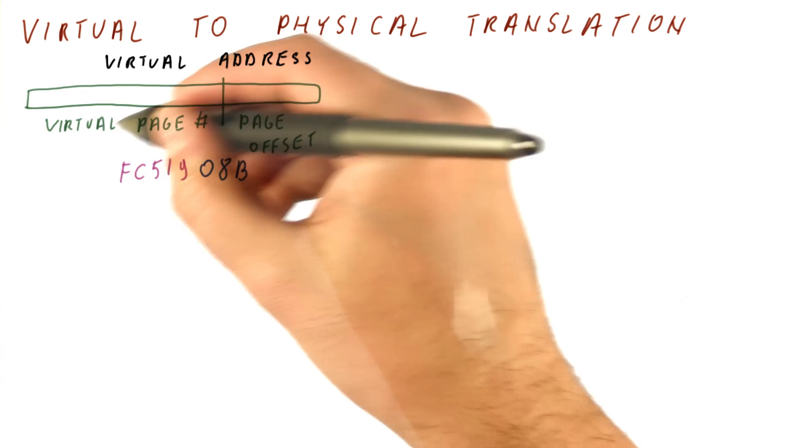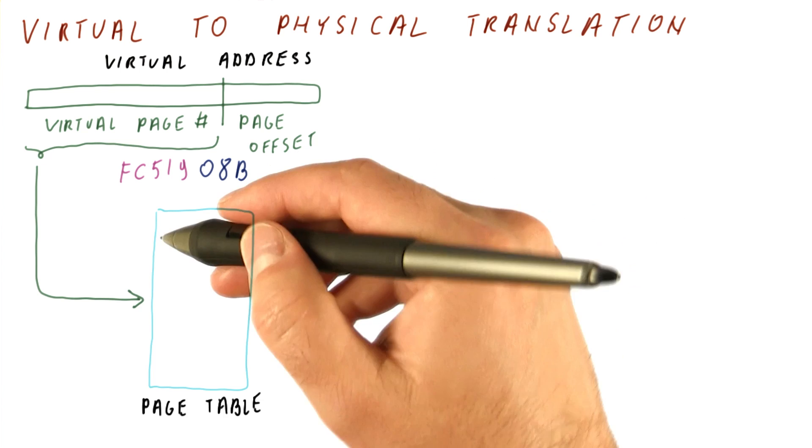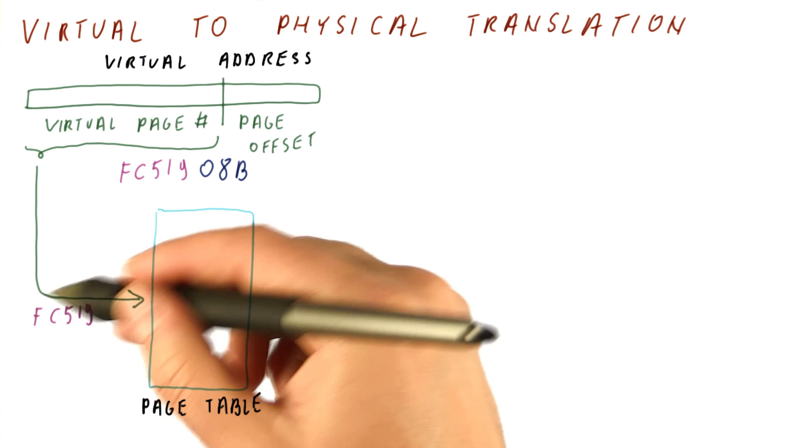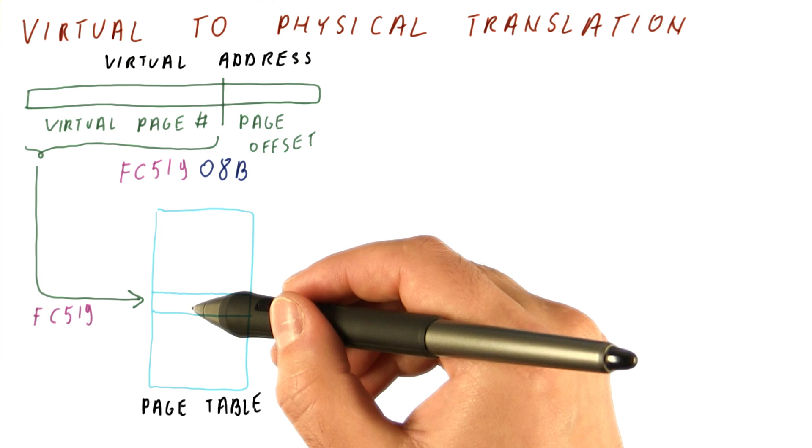We take the virtual page number and use it as an index into the page table. In this case, the index into the page table will be FC519. We find the entry with that index, which tells us what the frame number is that corresponds to this virtual page number. That is, where did we put that page in the actual physical memory?